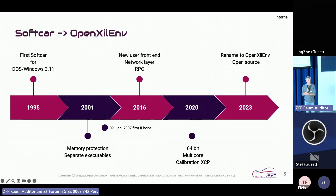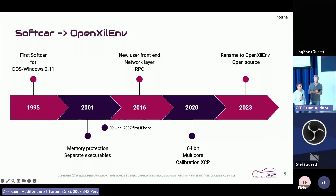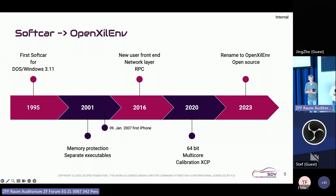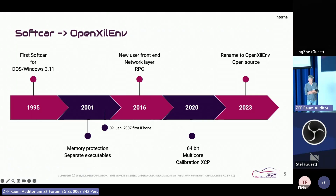1995 is a long time back — the first iPhone was in 2007, yet in 1995 we were already talking about software-defined vehicles under the name SoftCar. When I joined in 2004, it was already rolled out and heavily used. My first task was to implement the needed models and connections to FMUs and MATLAB Simulink for the simulation parts.